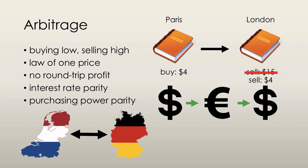Interest rate parity means that there are equal rates of return across currencies. Assuming that this is a risk-free transaction, there's no gain from choosing one country over another in which to invest. Essentially, a higher interest rate cannot be earned if funds are converted from one currency to another, left to accumulate interest, and then converted back into the first currency. According to interest rate parity, the same amount of the first country's currency will be earned after conversion back into the first currency.